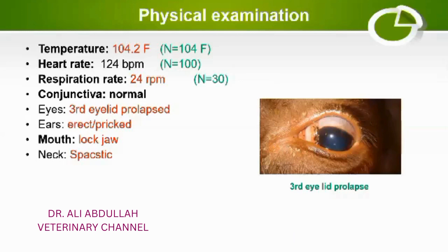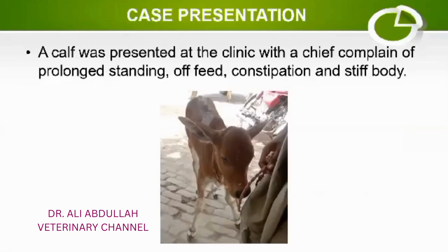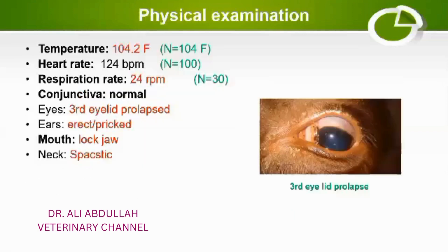When I examined the eye, the third eyelid was prolapsed, as you can see in this picture. The ears were pricked and erect, as shown in this picture. These findings also indicate that this calf is suffering from some sort of spastic paralysis.